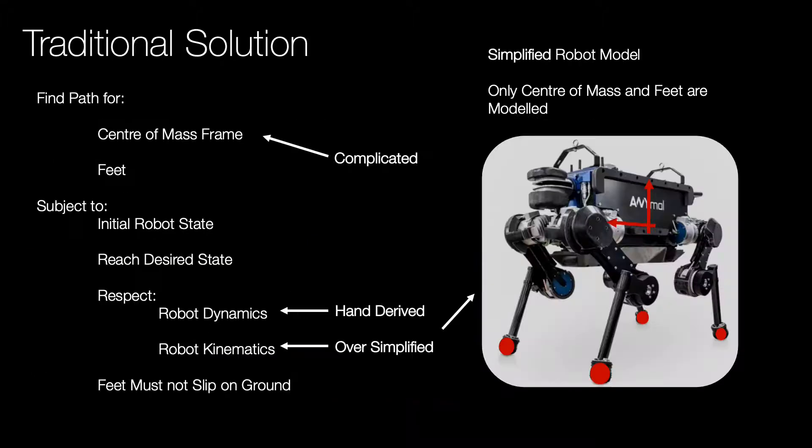Traditional solutions such as trajectory optimization require solving a non-linear optimization. This is solved using hand-derived or overly simplified models, which limit the range of what a quadruped robot can do.